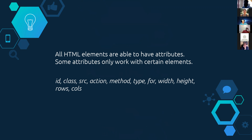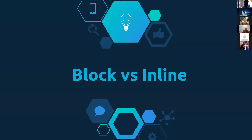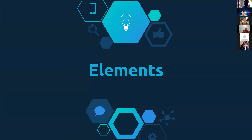Attributes. All HTML elements are able to have attributes. Some attributes only work with certain elements. Common attributes include ID and class. Source works with images, videos, and audio. Action and method only work on forms. Width, height, rows, and columns only work on text areas. For example, 'lang equals EN' — lang is the attribute, EN is the value, and it's on the HTML tag. It tells the browser the language of the text in your website is English, which is useful for accessibility screen readers.